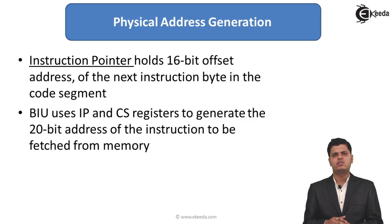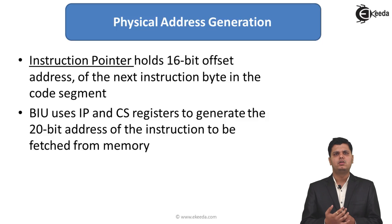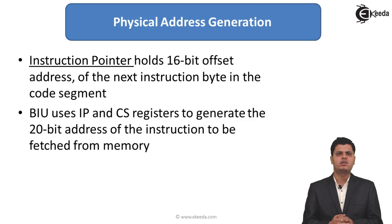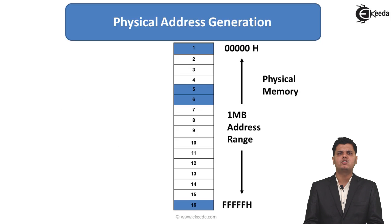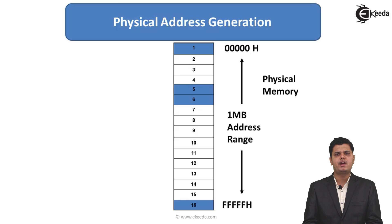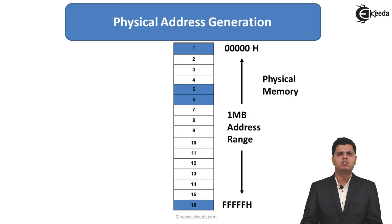The instruction pointer holds the 16-bit offset address, which is added with the segment register value to form a 20-bit physical address. The bus interface unit uses the instruction pointer (IP) and the code segment register (CS) to generate the 20-bit address of the instruction to be fetched from memory.